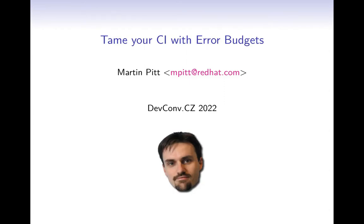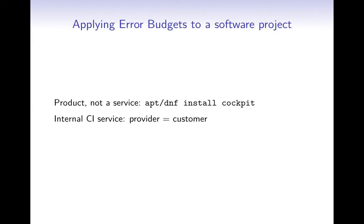Hello everyone, I'm Martin Pitt, I lead the Cockpit team at Red Hat. Thanks a lot to Steph for the introduction about error budgets. I want to explain how we apply these principles to our Cockpit project. When I first heard about this concept, error budgets didn't really seem to apply to our project — Cockpit is a software product; users install it from a package. We don't provide a service to run Cockpit for them. However, we do use web services internally — machines and an OpenShift cluster to run our tests — and we crucially depend on that infrastructure.